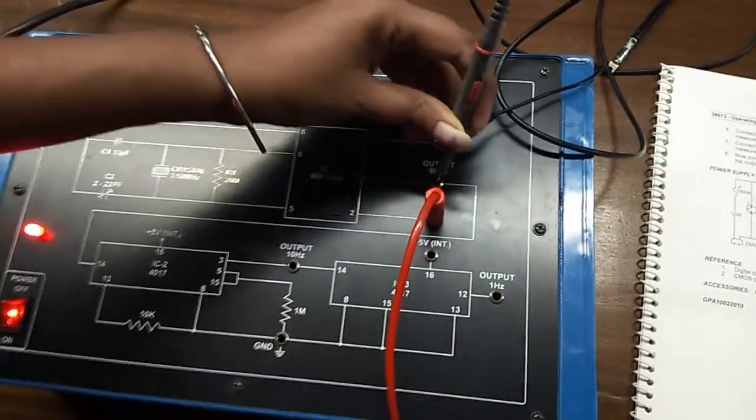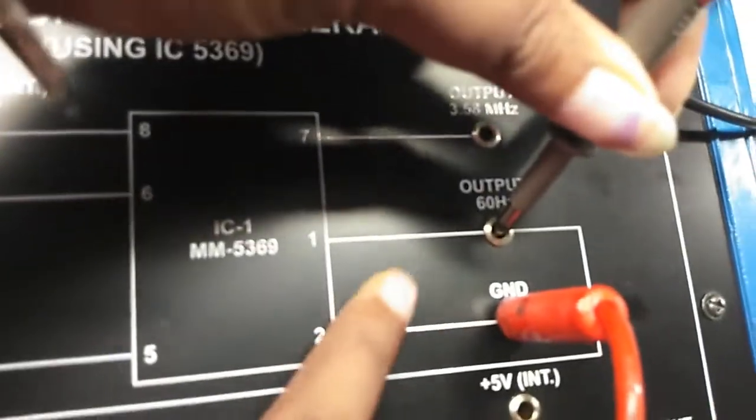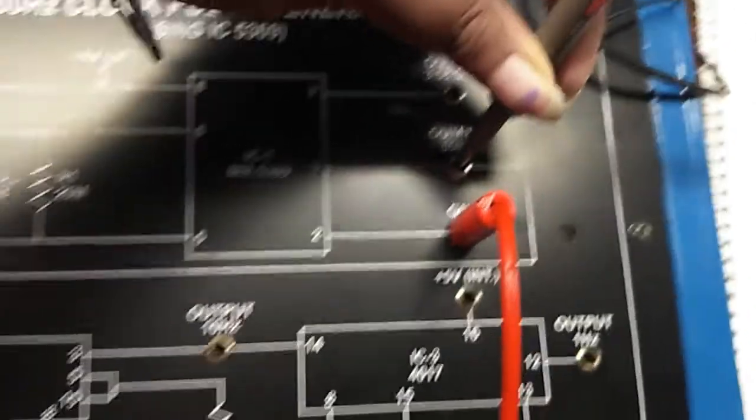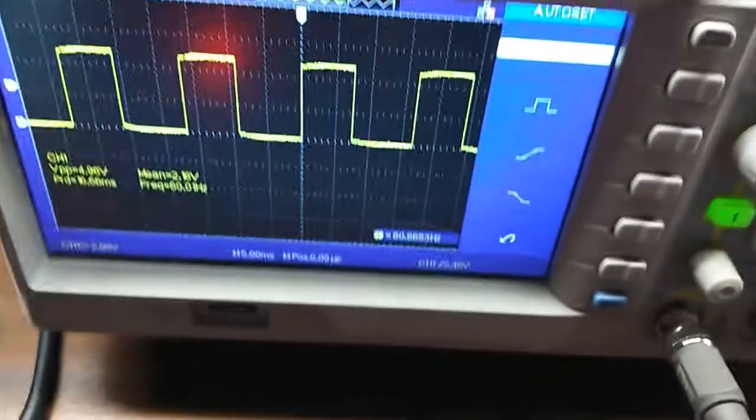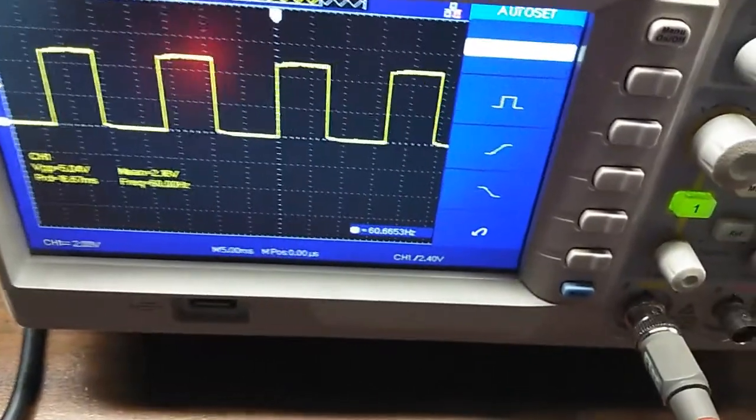Now, we will observe the output 60 hertz frequency. Connect the CRO at this output 60 hertz and the ground connection will be here. Then observe the frequency. The output waveform is an undistorted square waveform and you can see the frequency is 60 hertz.